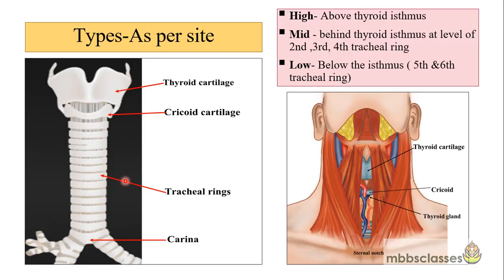Tracheostomy can also be divided according to the level where the stoma is made in the trachea — it may be high, mid, or low. Before discussing these three types, let's review the anatomy of the trachea in brief.